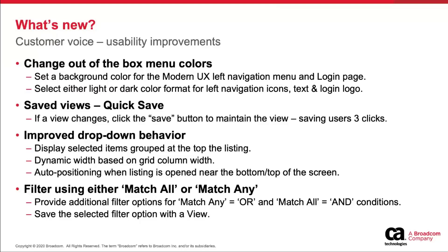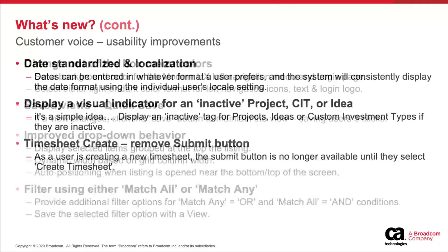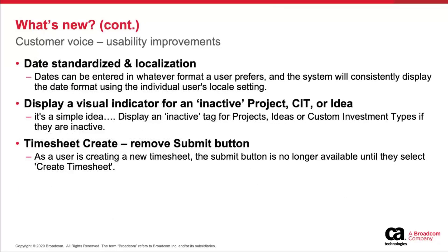Another capability is, when you're searching or filtering on a grid, the ability to use match all or match any. Match any is an OR condition, which is new. Match all, which is an AND condition, was basically what was available in the product before we added these two options. The second piece of this is that when you use those capabilities, those options are saved with the view.